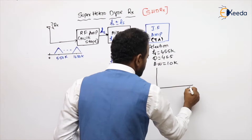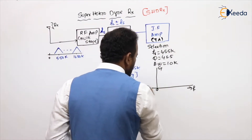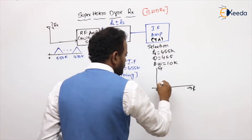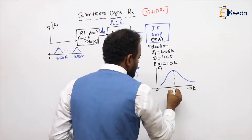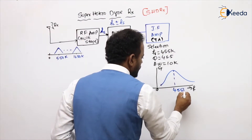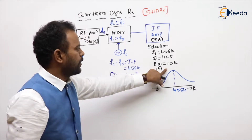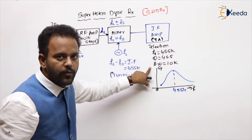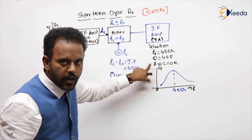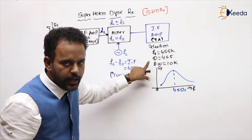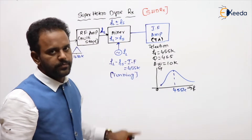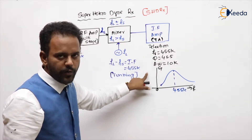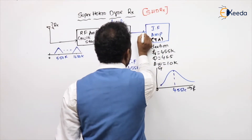If I draw the diagram of frequency versus gain, the IF amplifier has a peak exactly at 455 kHz with a bandwidth of exactly 10 kHz. These values will never change. If these values are not changing, then bandwidth will never change — bandwidth is always 10 kHz. If bandwidth is always 10 kHz, there is no problem of selection.